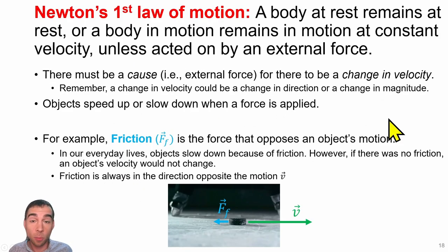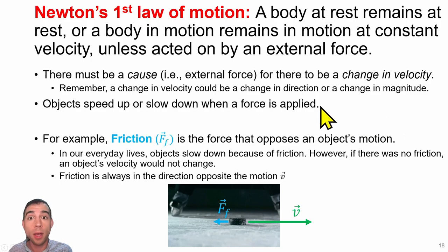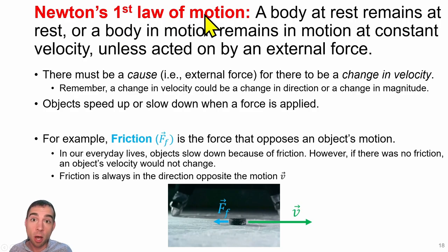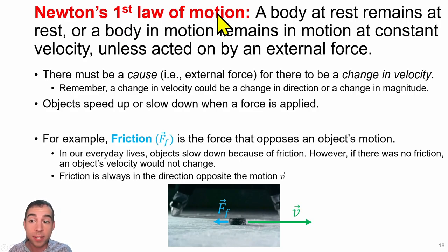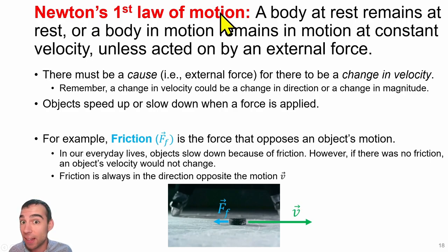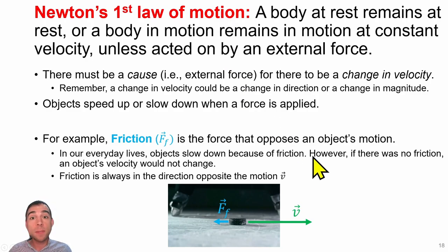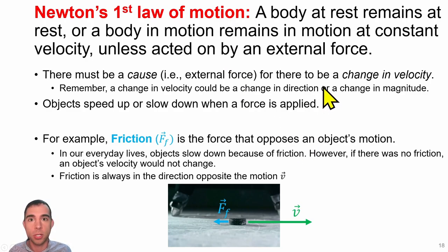Now we'll talk about Newton's laws of motion, and we'll cover this more in unit 3B as well. There are three laws of motion you need to know. Newton's first law states that a body at rest remains at rest, or a body in motion remains in motion at constant velocity, unless acted on by some external force. This means there must be a cause for an object to speed up or slow down — it won't happen without some net force acting.